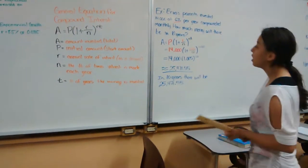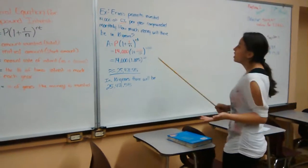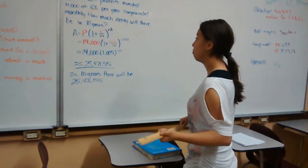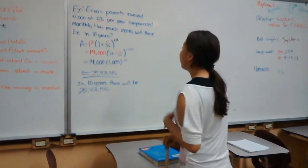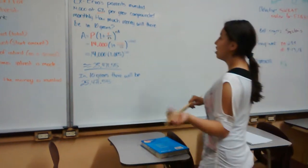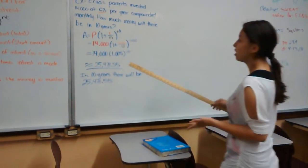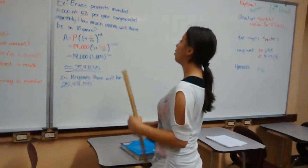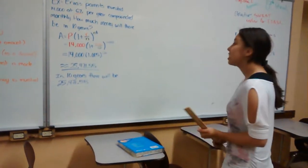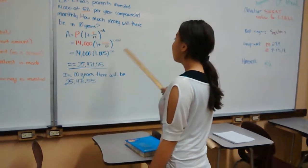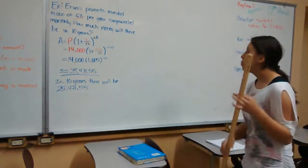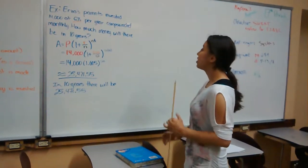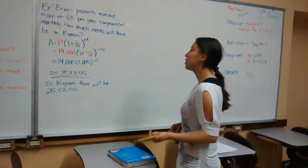And t is the number of years the money is invested. For example, Ernst's parents invested $14,000 at 6% per year compounded monthly. How much money will that be in 10 years? So we have the general equation. If you plug it in, it would be 14,000 times open parenthesis one plus 0.06 over 12 close parenthesis to the power of 12 times 10.